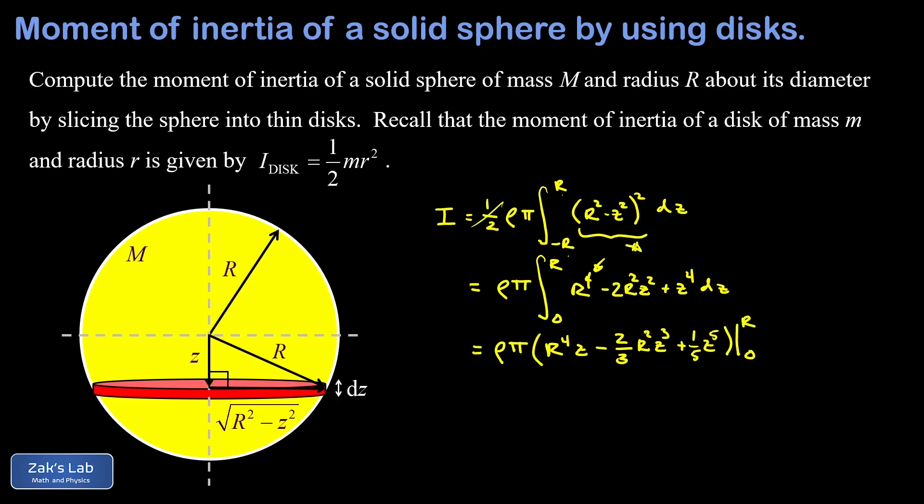This is all evaluated from zero to r. And this is the payoff of recognizing that this integrand was even. That lower limit of integration zero is very simple. If I sub in zero for z I get zero. So I don't even have to think about that. All I have to do is sub in my upper limit of integration where I replace z with big R.